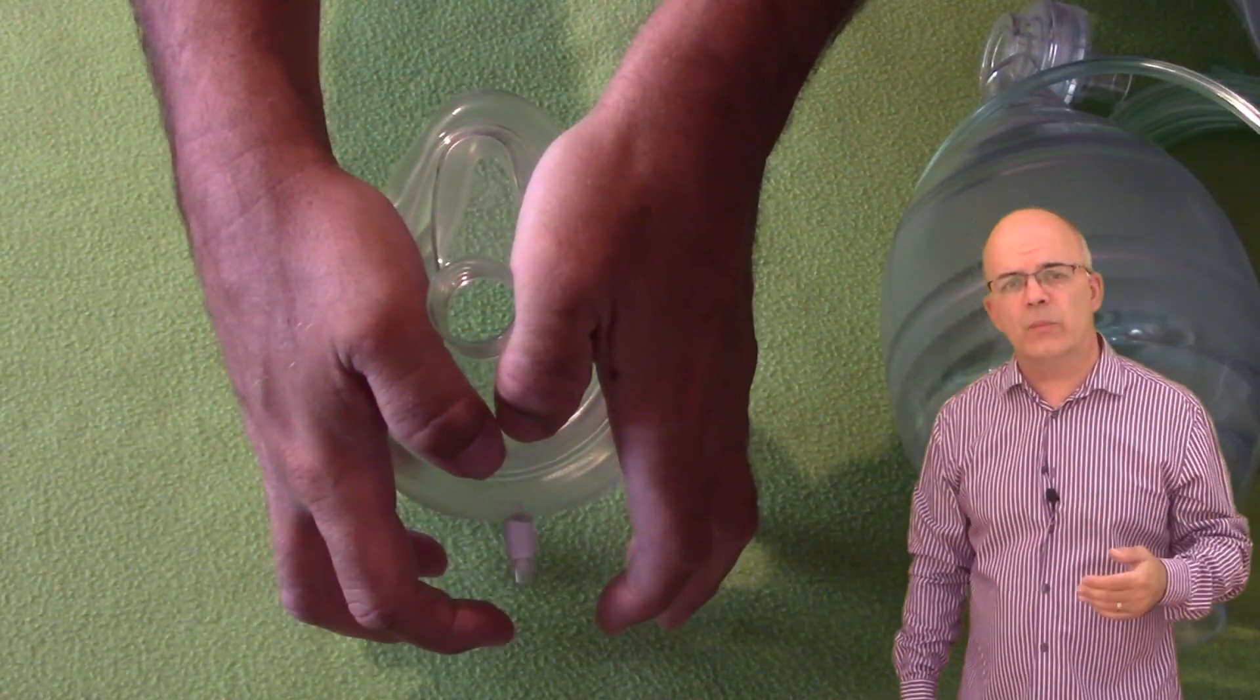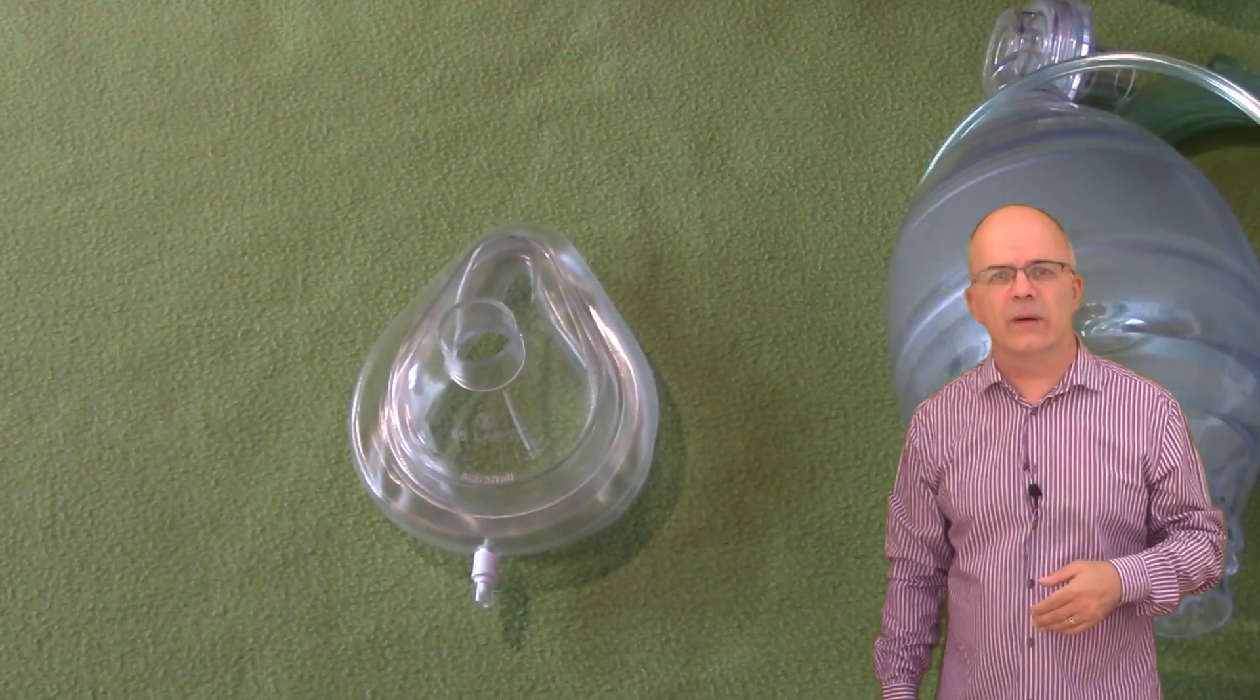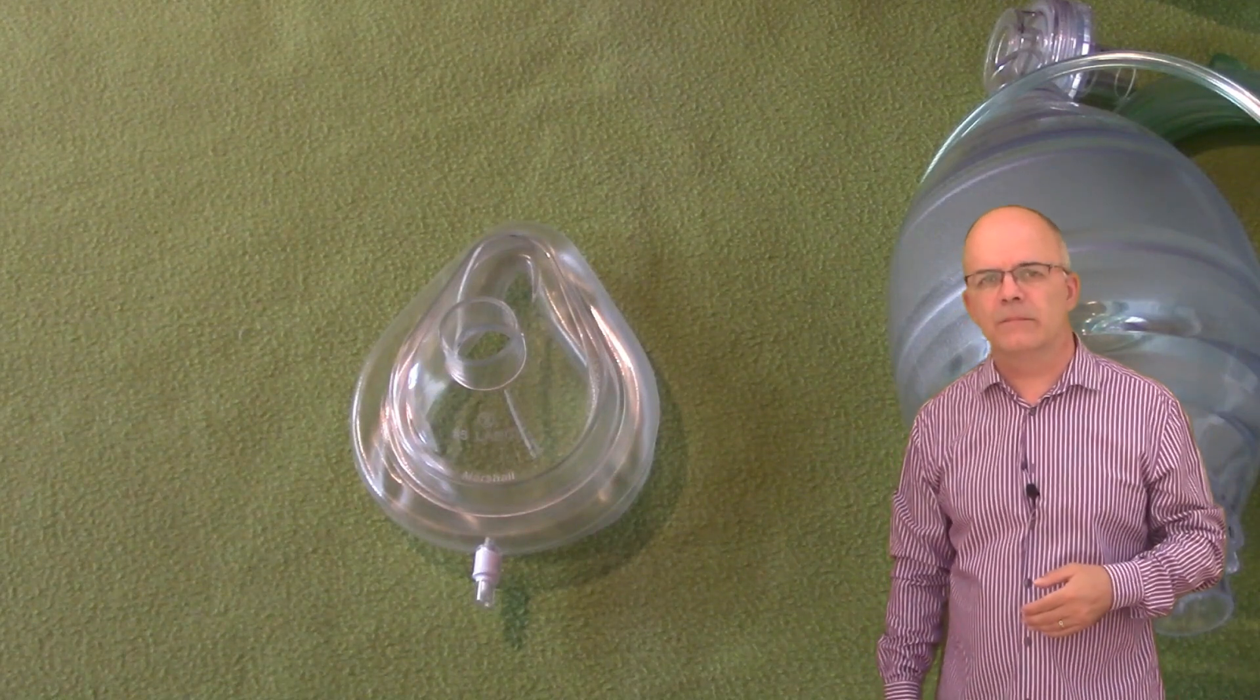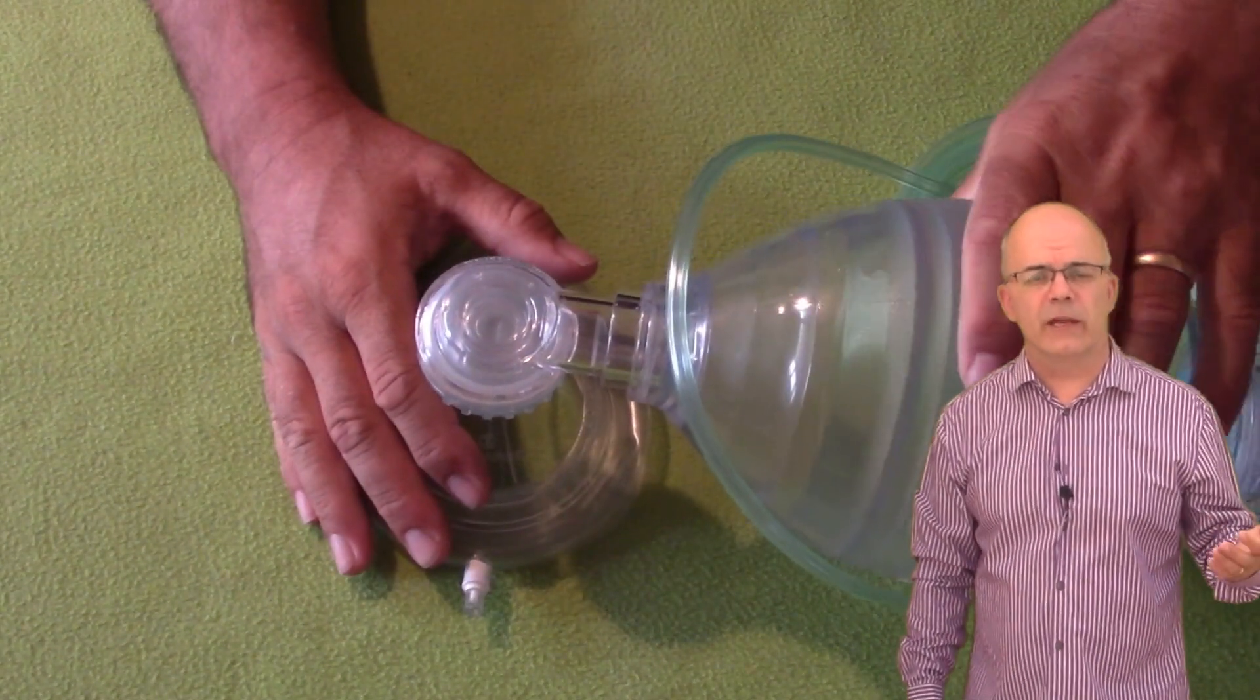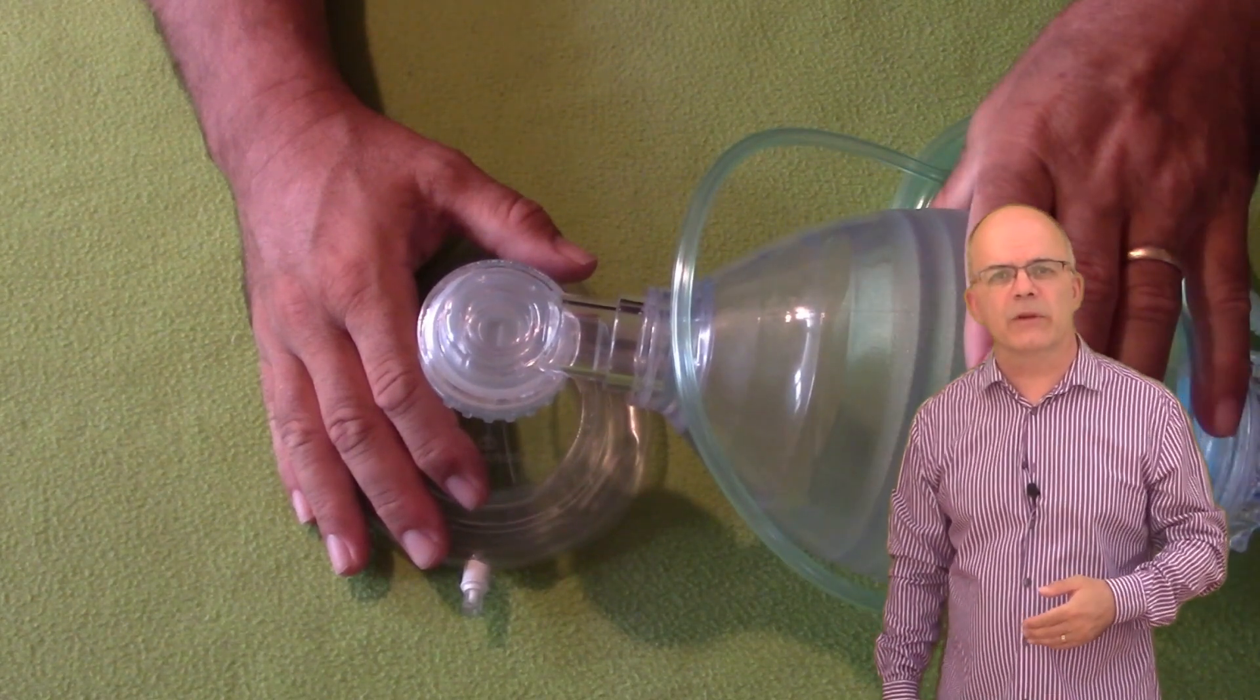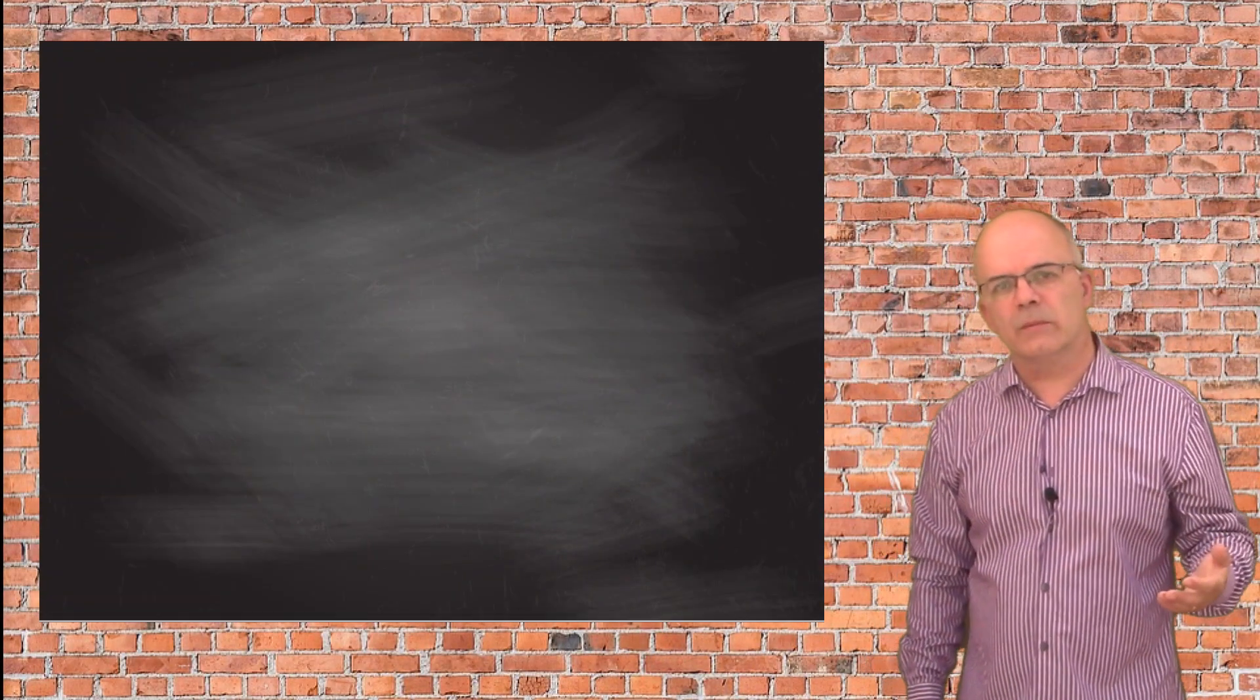This is therefore a two-person technique. One person will hold the mask in place, and the other will then squeeze the bag valve mask. This approach is superior to the one-handed technique. Once you are sure that the mask is fitting correctly, then the bag should be inflated slowly and gently. Overinflation can risk pushing air into the stomach, making vomiting and aspiration more likely, and a high rate of ventilation, particularly in cardiac arrest, has been shown to be detrimental. So in summary,